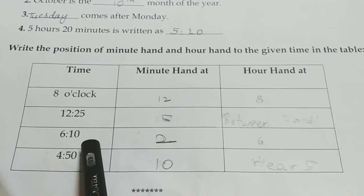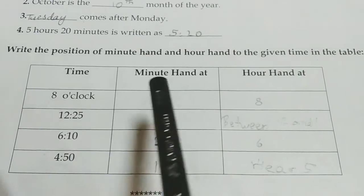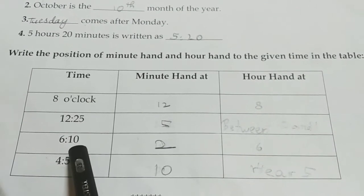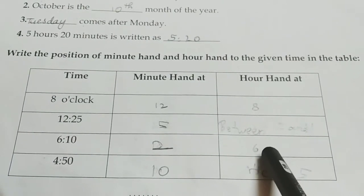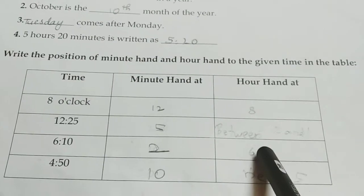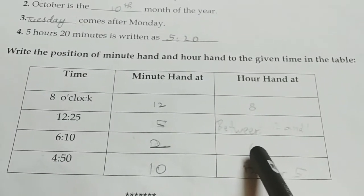6.10. 6.10 means 10 minutes means the minute hand should show 2. And the hour hand should a bit, little bit, it passes 6. It moves from 6. Little bit, it moves from 6.